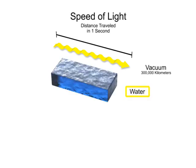In water, light travels at about 75% of its speed in a vacuum, or 225,000 km per second.